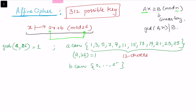As explained, this is a linear congruence solvable only when gcd(a, 26) = 1. If this condition is not met, the congruence may not be solvable, so we must take care of this necessary condition. With 12 values for a and 26 for b, there are 312 possible keys in total.